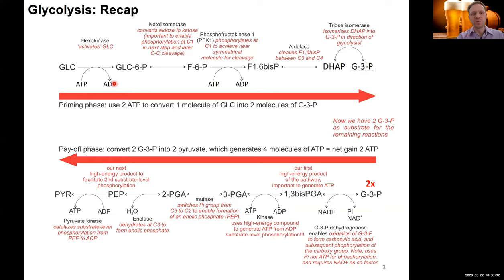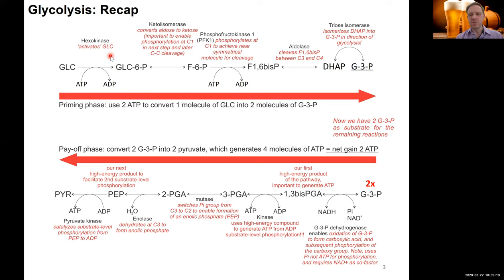Our first step was the phosphorylation of glucose to glucose-6-phosphate — a hexokinase reaction. Kinase is an enzyme that catalyzes phosphorylation using ATP as the phosphoryl group donor. It was counterintuitive at first: our goal of glycolysis is to produce ATP, yet in the first step we're using ATP. But this was important for several reasons: activating glucose for further breakdown, making the molecule more polar to trap it within the cell, and changing the concentration gradient of free glucose so we can continuously take up more.